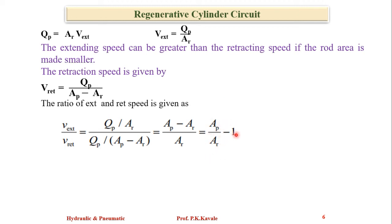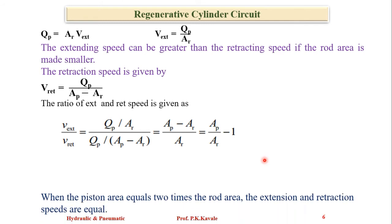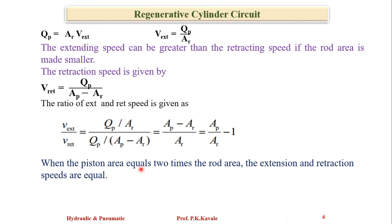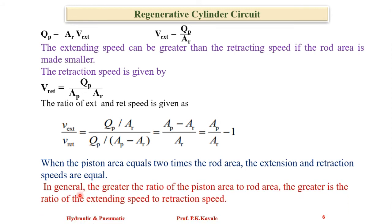We get Vext over Vret equals Ap over Ar minus one. When the piston area is equal to two times the rod area, then extension speed becomes equal to retraction speed.